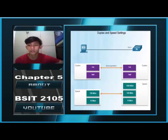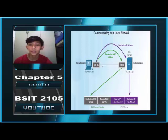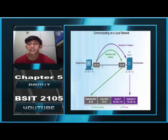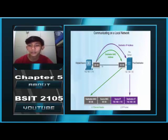Destination on the Same Network. There are two primary addresses assigned to a device on an Ethernet LAN. Physical address: the MAC address, used for Ethernet NIC to Ethernet NIC communication on the same network. Logical address: the IP address, used to send the packet from the original source to the final destination. IP addresses are used to identify the address of the original source and the final destination. The destination IP address may be on the same IP network as the source or may be on a remote network.